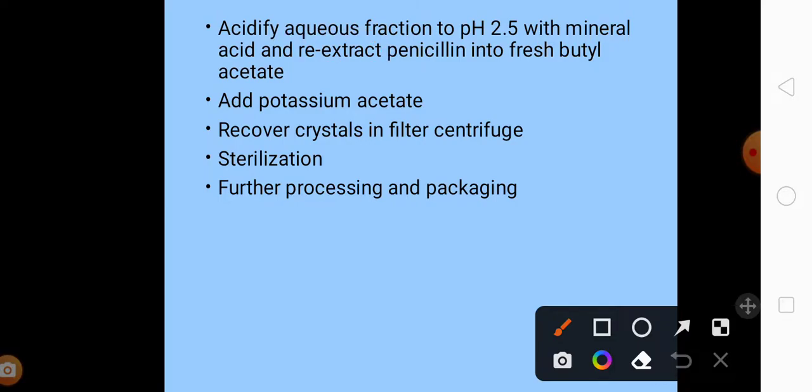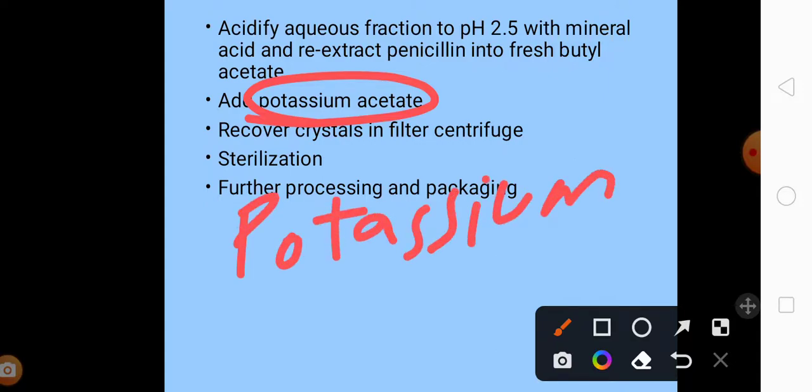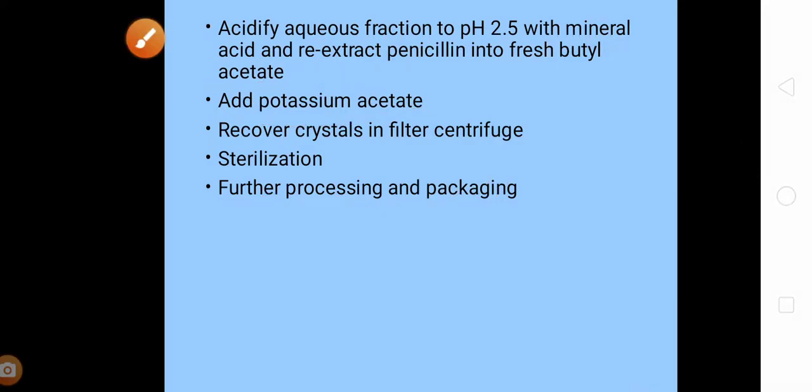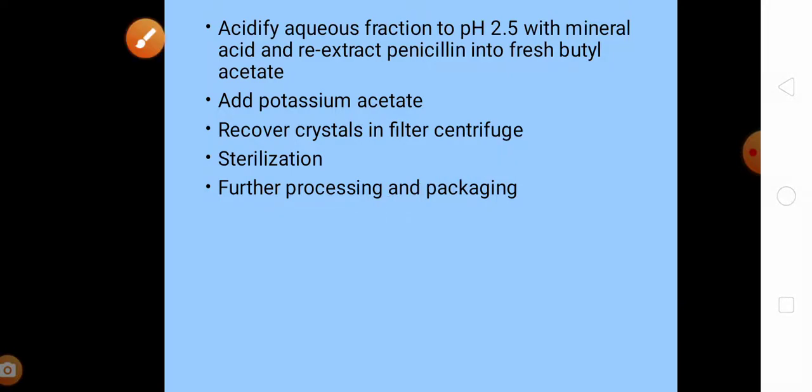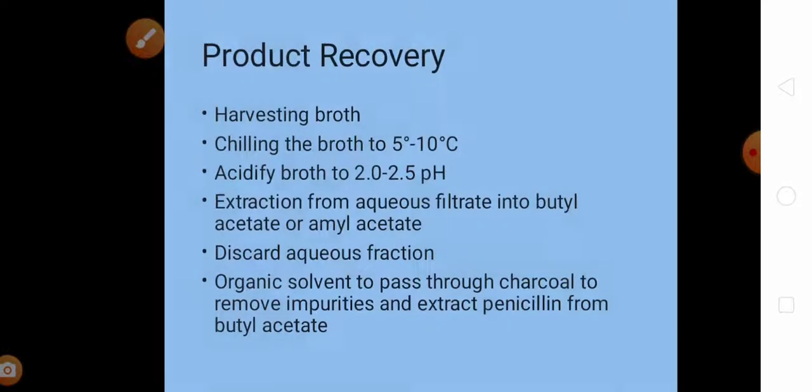Now to this we will add potassium acetate. Adding potassium acetate will crystallize our penicillin into potassium salts. We can recover this potassium salt crystals by filter centrifuge. After this centrifugation, the crystals will be sterilized. Sterilization is followed by further processing and packaging, and finally we have recovered our penicillin. Now I'll go back to the diagram again and explain.